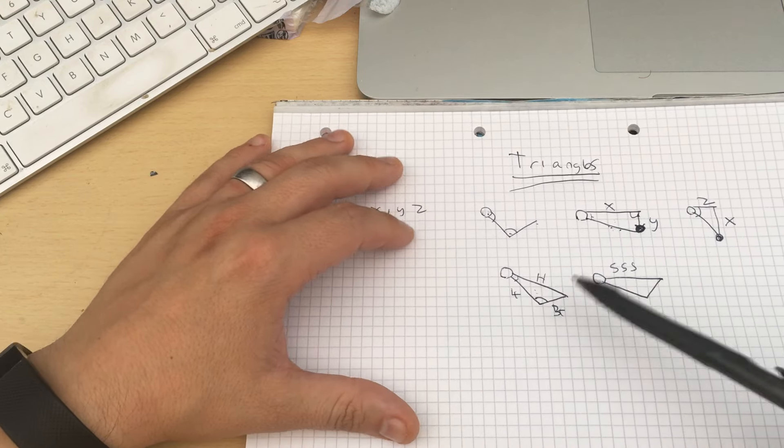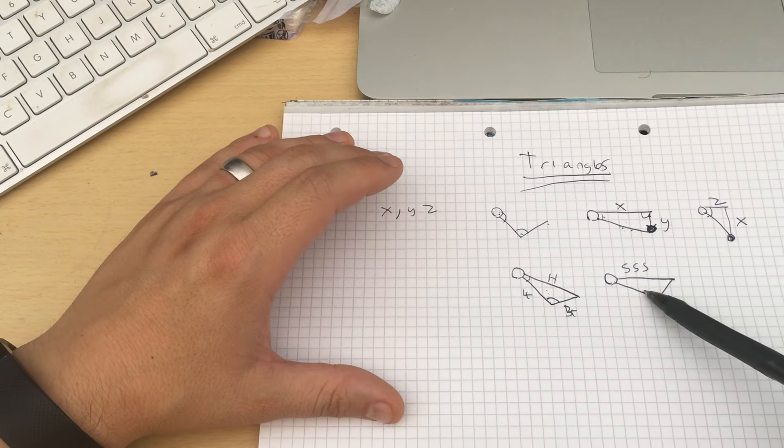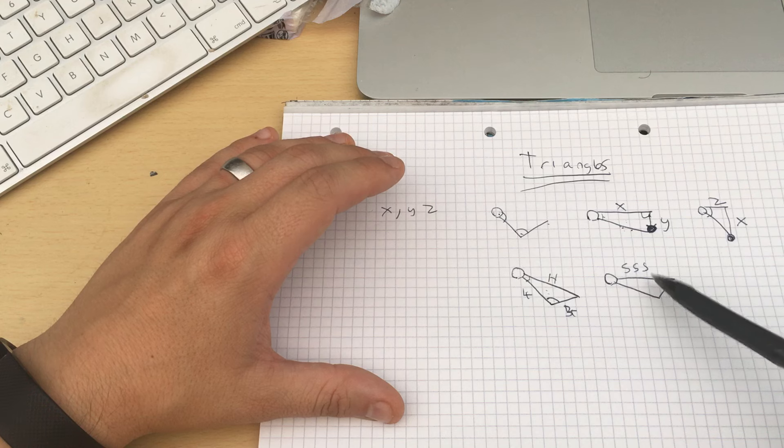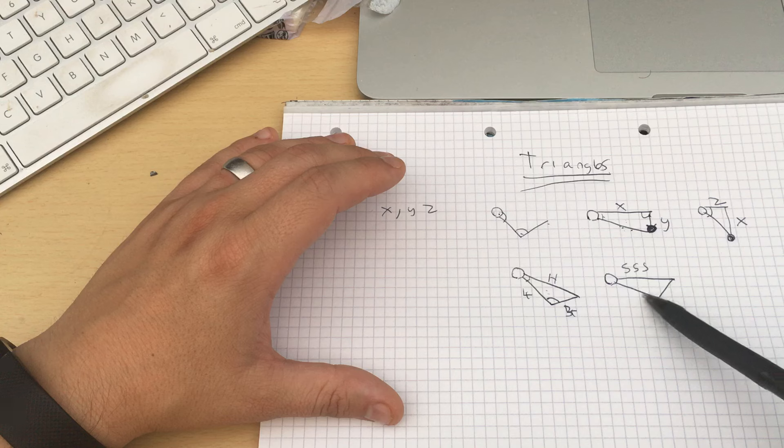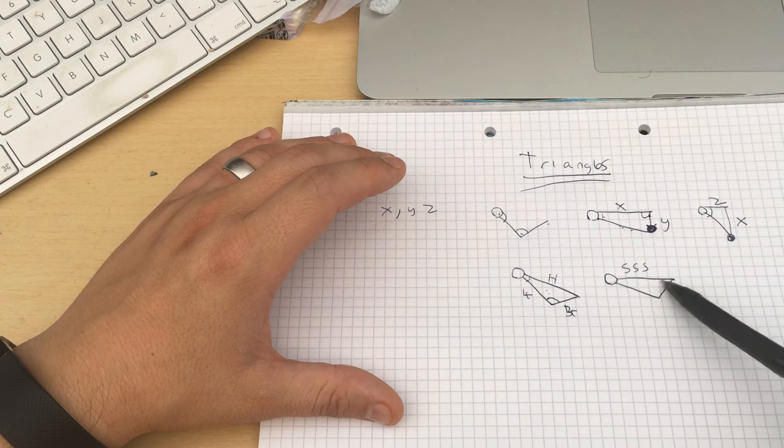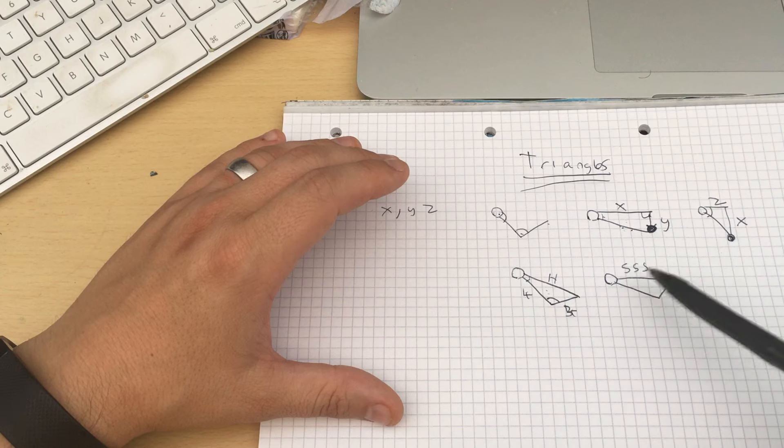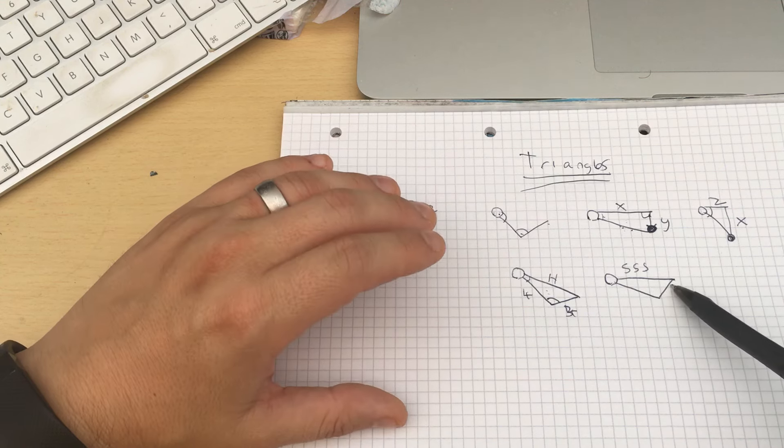You then feed that into what they call the SSS triangle, which can then give the angles to bend the arm so that that length is equal. So you know this hypotenuse, you know these two lengths, you can then work out what you need to bend the arm so that it reaches that far.